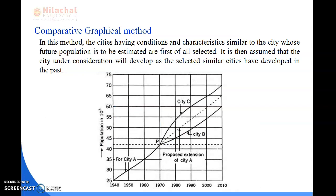Now we study the comparative graphical method. In this method, cities having conditions and characteristics similar to the city whose future population is to be estimated are first selected. It is then assumed that the city under consideration will develop as those selected similar cities have developed in the past. We compare cities with the same conditions and similar characteristics and draw a graph for this method.